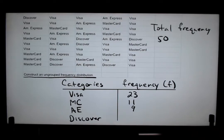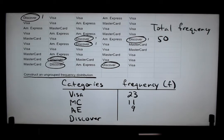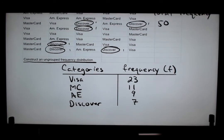Last but not least, Discover — and yes, we do have some that still use Discover. There's a very small number here. Let me count: one, two, three, four, five, six, seven. That's it — only seven customers use Discover, so seven out of 50.